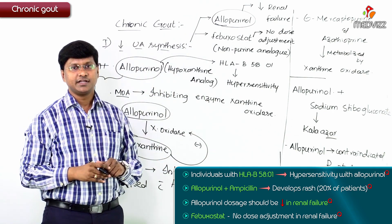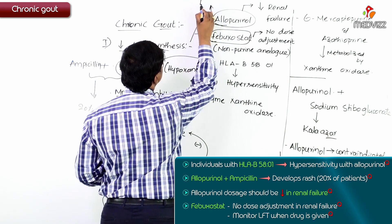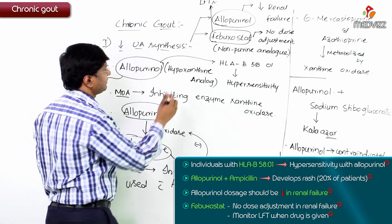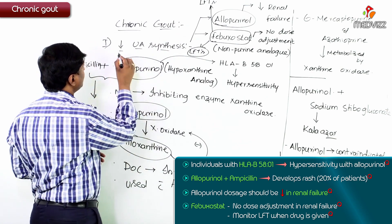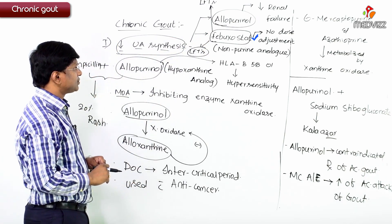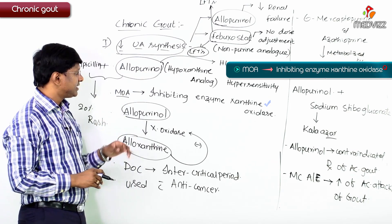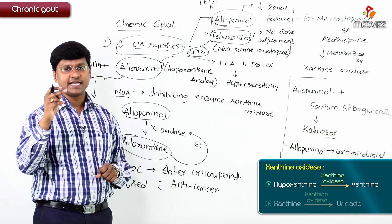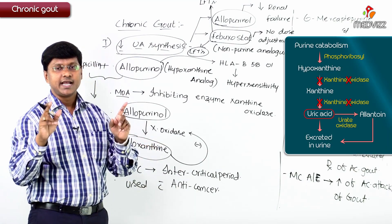When giving febuxostat, liver function tests must be monitored, as febuxostat can result in abnormal liver function tests. In summary, the drugs that decrease uric acid synthesis are allopurinol and febuxostat. They act by inhibiting xanthine oxidase, which is required for the conversion of hypoxanthine to xanthine and xanthine to uric acid, thereby reducing uric acid synthesis.